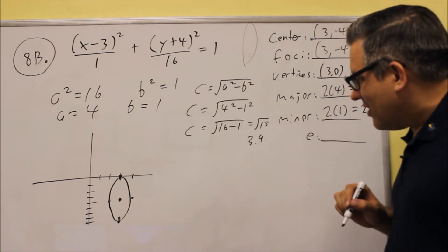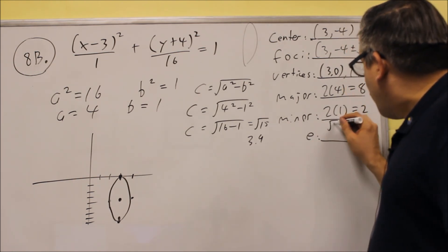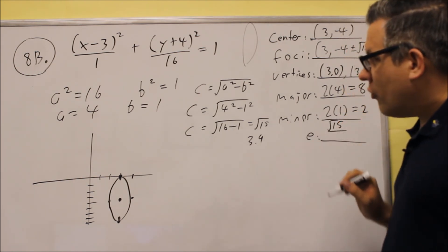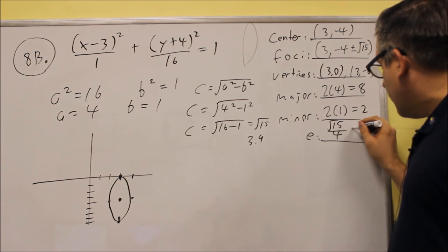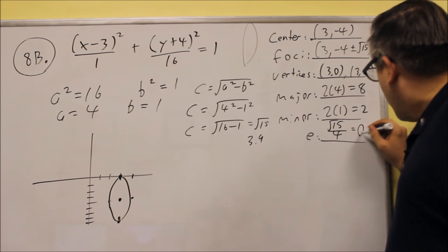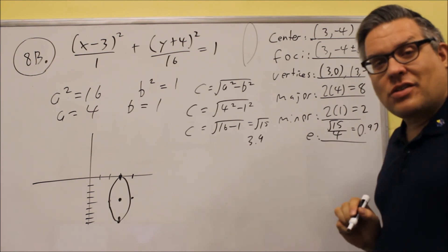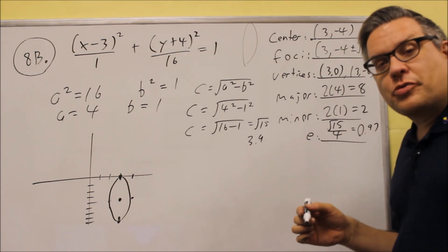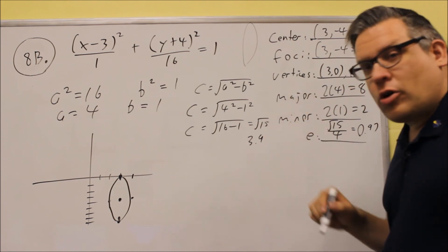Eccentricity is c over a. So that's going to be square root of 15 over 4. If you're curious about the decimal on this one, that's going to be 0.97. We mentioned in class that the farther away the decimal is from 0, the narrower it actually is.